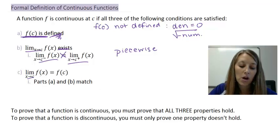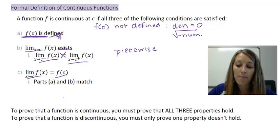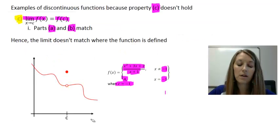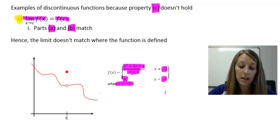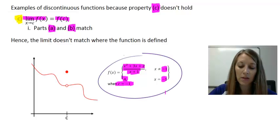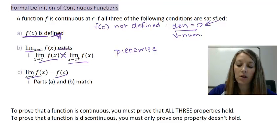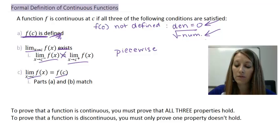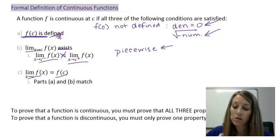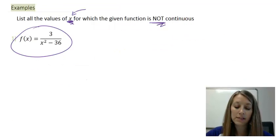The third condition: what causes our limit and our function value to not match up? The only example we have of that is also created by a piecewise function. So to play devil's advocate, we have to figure out where our denominator equals zero, where square roots produce negative numbers, or where our piecewise function pieces do not match up. Let's use that in all of these examples.